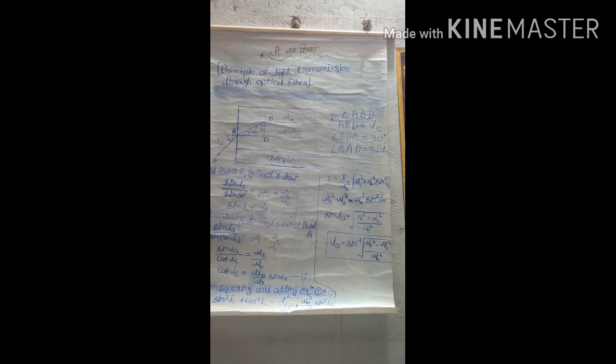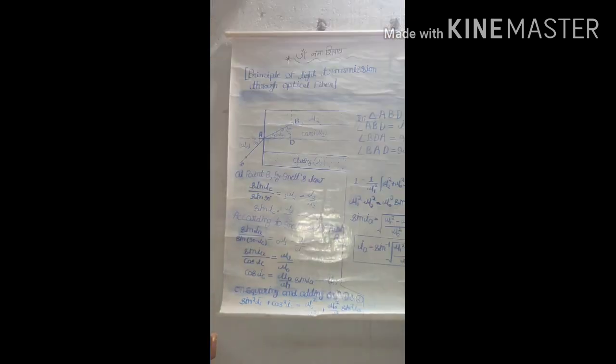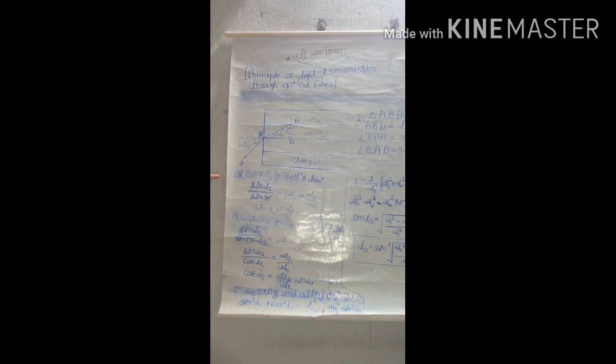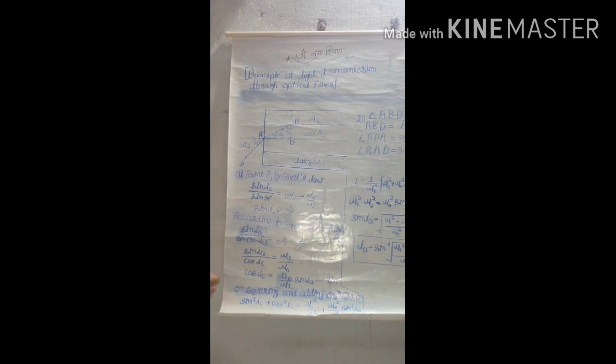In this way, we get the value of angle IA. As we know that for total internal reflection, the value of angle ABD must be greater than the critical angle. For this, the value of incident angle must be less than this calculated angle IA. So the value of angle IA obtained by this equation is the maximum value of incident angle. If any light ray is incident at an angle less than IA, then total internal reflection takes place in the inner core of optical fiber.